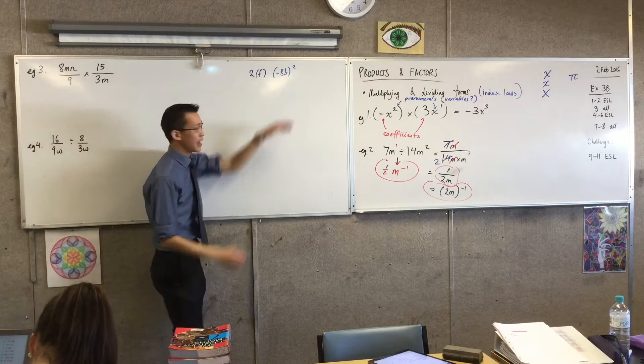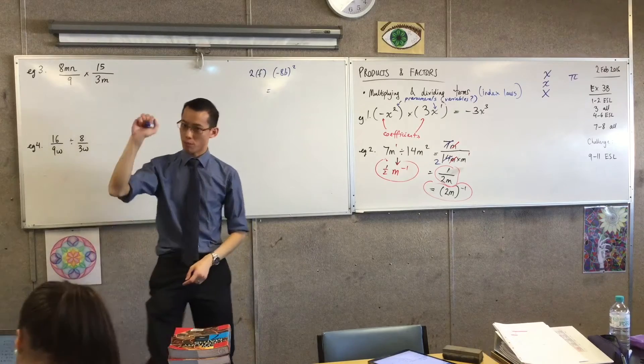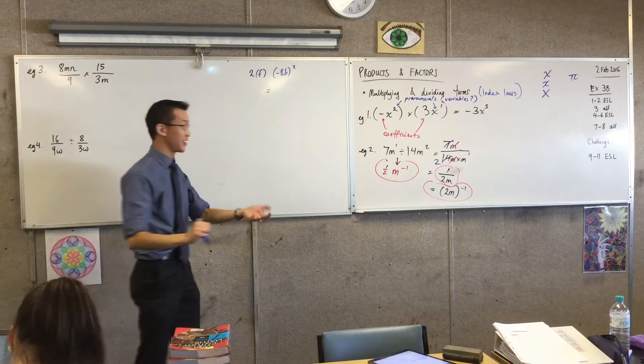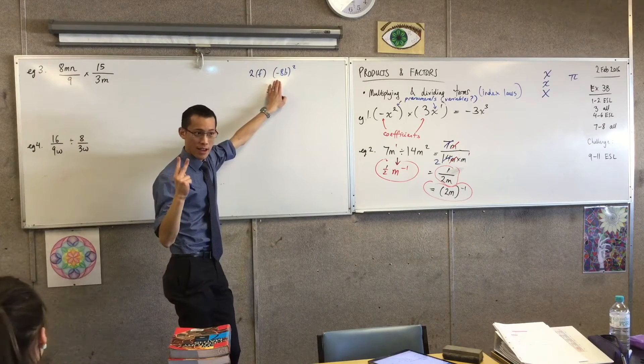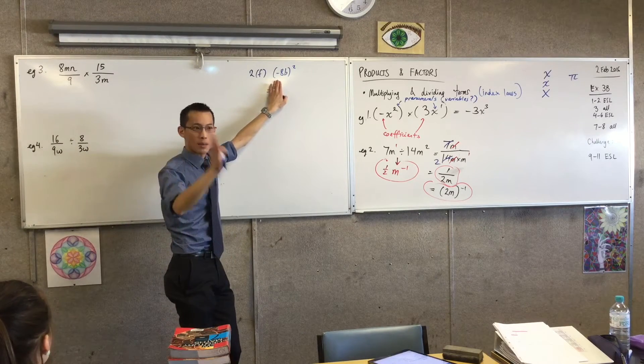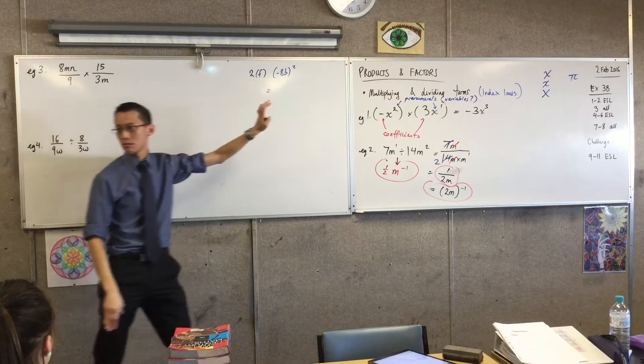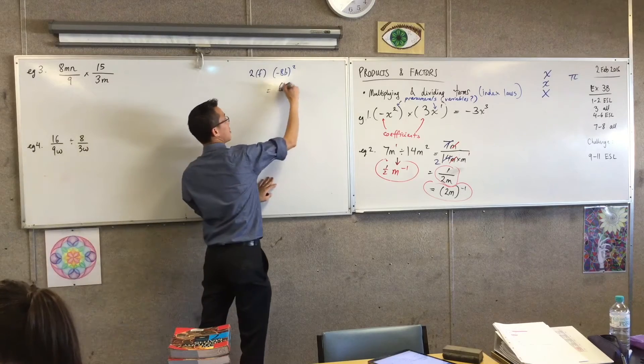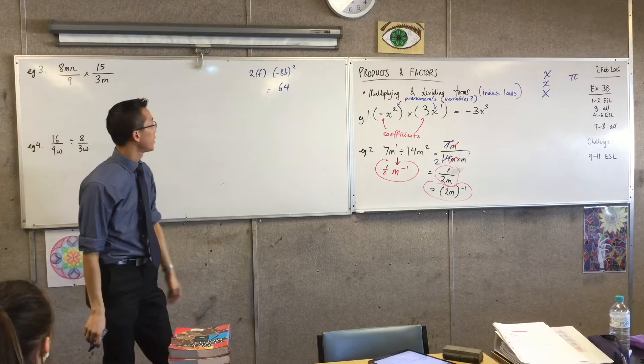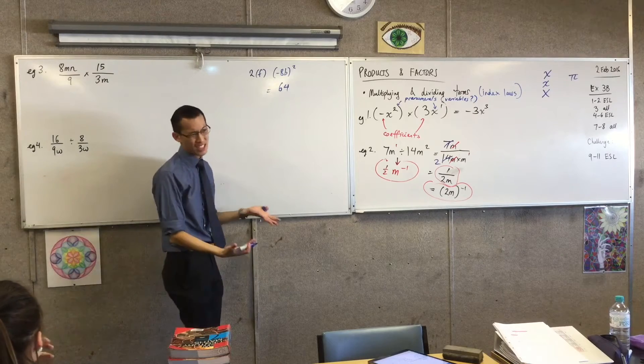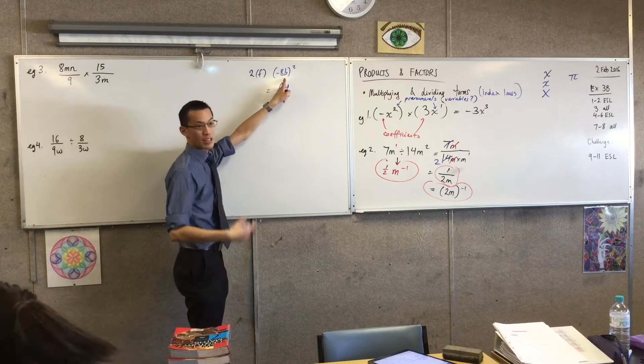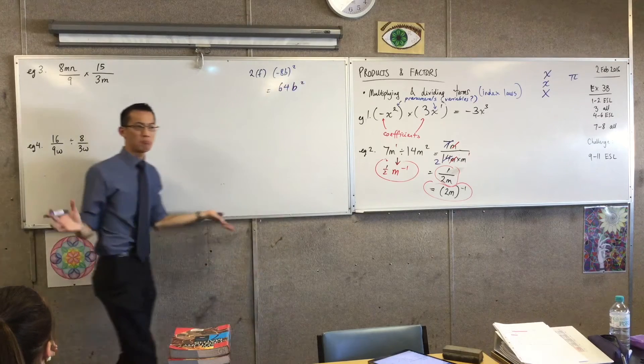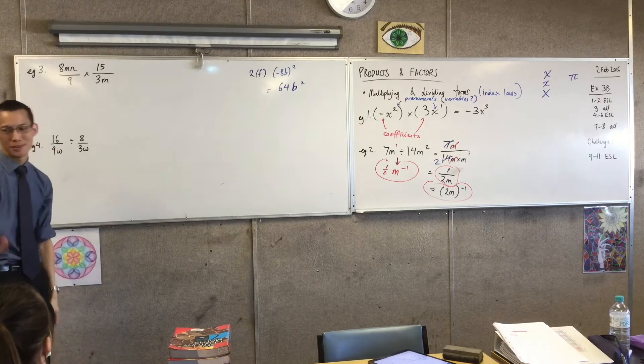So in fact, this is shorthand for: do the coefficients first, and then the pronumerals. Get the order right. Negative 8 is getting squared, so you do negative 8 times negative 8. What happens to those negatives? We cancel that, that's great. 8 by 8, that's 64. Coefficient out of the way, it's done. And then you move on to the pronumerals. It's actually pretty straightforward because B times B, we already have shorthand for that. So it's B squared.